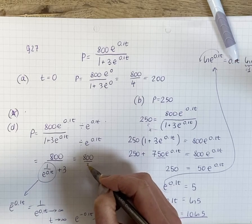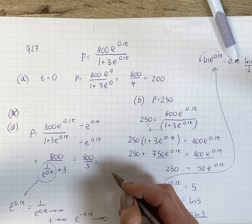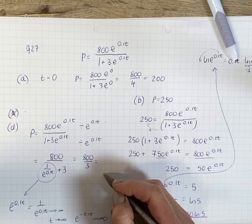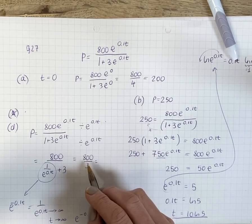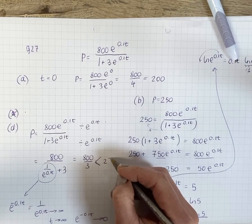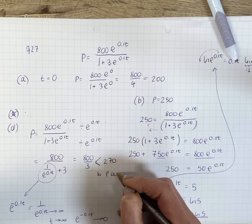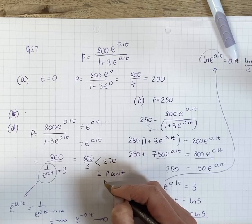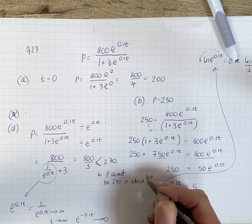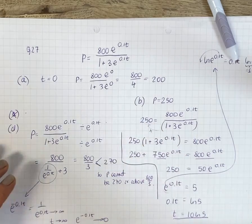So if you look at this, you get 800 divided by 3. So 800 divided by 3, which is clearly going to be less than 270. Let's see, because 810 over 3 would be 270, so this is less than 270. You can work it out what it is. So P cannot be 270 or above 800 over 3. So hopefully that helps.